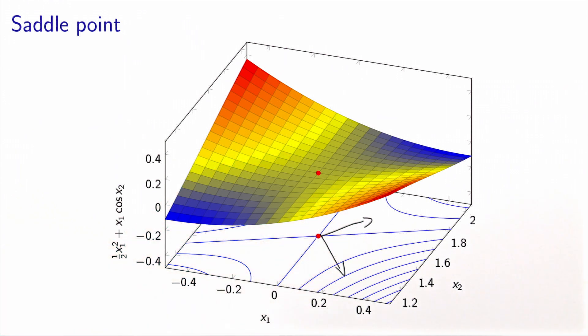So this point is not a minimum. It's actually not even a maximum. It's called a saddle point. So a saddle point is a point which is a stationary point. That is, the gradient is equal to zero. But the function is concave in some directions and convex in some other directions, similar to the saddle of a horse.